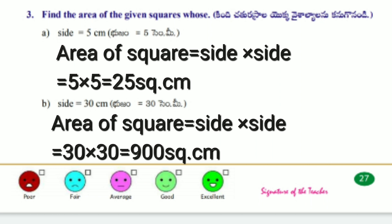b) Side equals 30 cm. Area of square formula: side times side equals 30 times 30 equals 900 square centimeters.